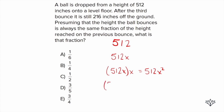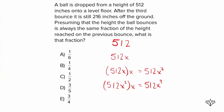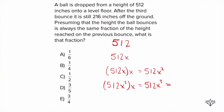Now we multiply again by that same fraction x. So we have 512x squared times x, which is 512x cubed. That's where we are after the third bounce. And what do we know? After the third bounce, the height was 216 inches off the ground. So our equation is: 512x cubed equals 216.